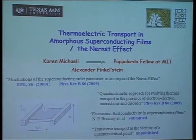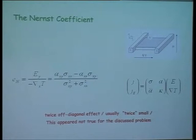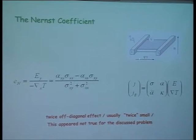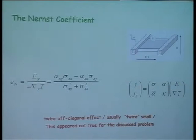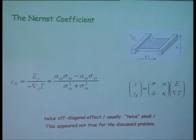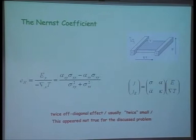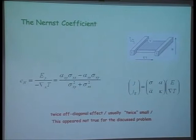This is the standard geometry of the Nernst coefficient: there are two reservoirs which fix temperature to be different, and as a result of the temperature difference, you measure the voltage across, all happening in the presence of a magnetic field perpendicular to the plane. Looking from the point of view of the general tensor of Onsager relations, it is a twice off-diagonal effect — from thermal to electric is one, and going in the perpendicular direction is another. When it is longitudinal, it is a thermocouple, and when it is transverse, it is the Nernst effect.